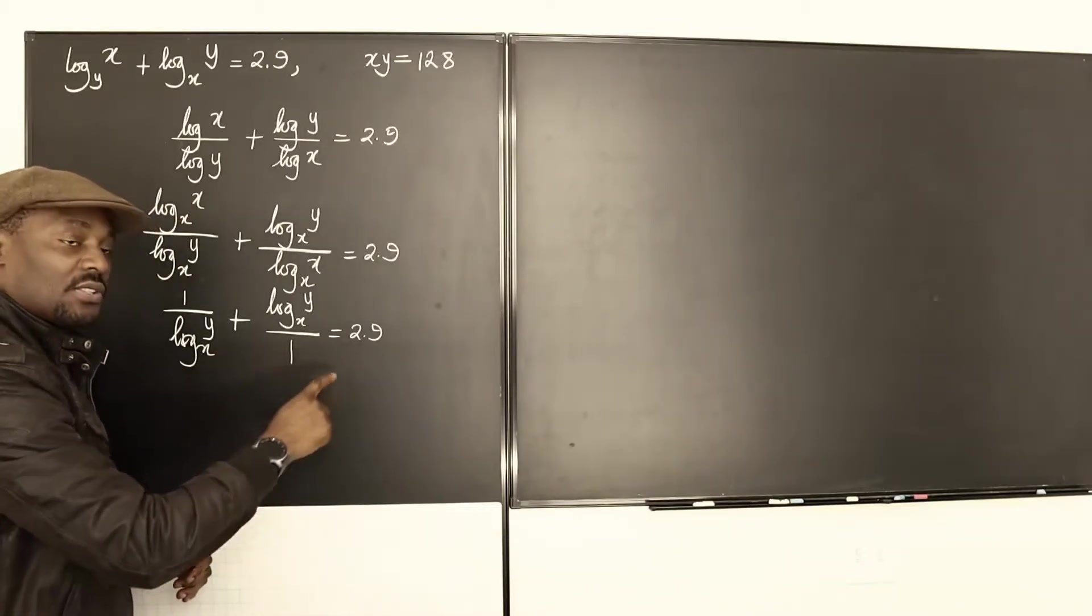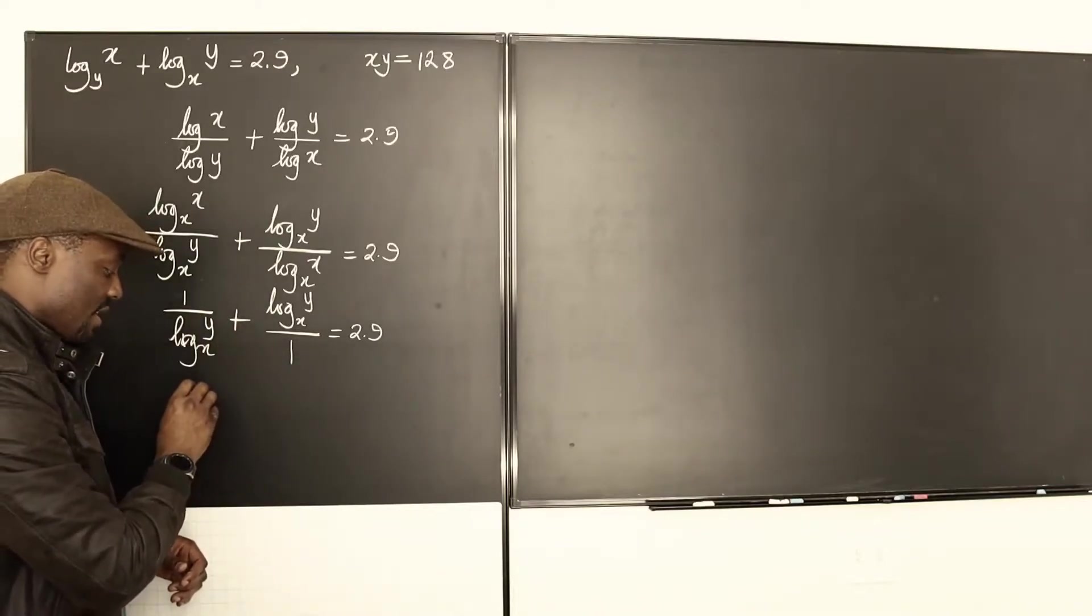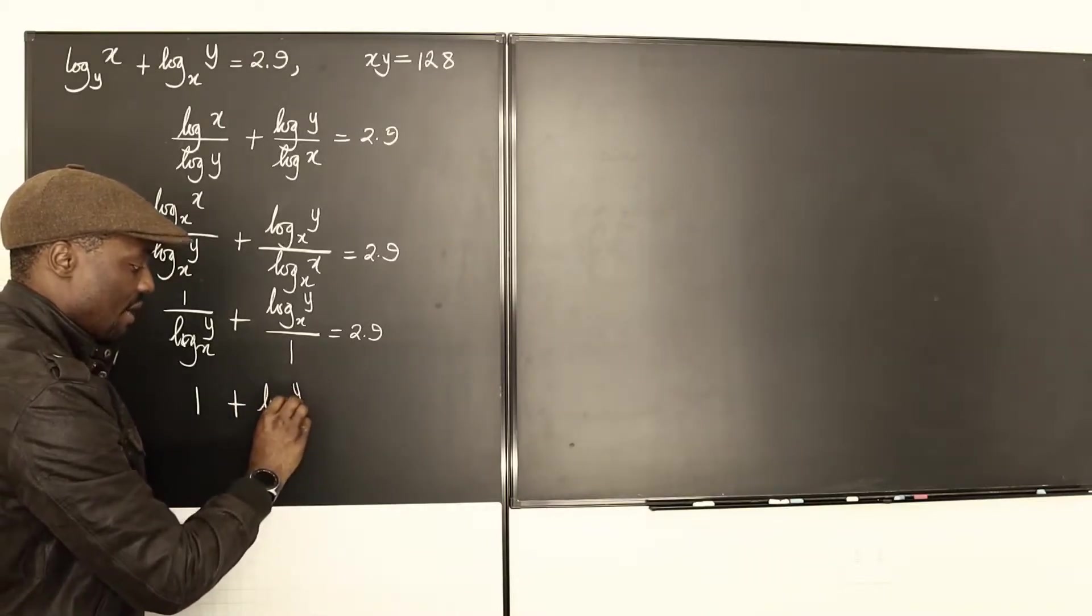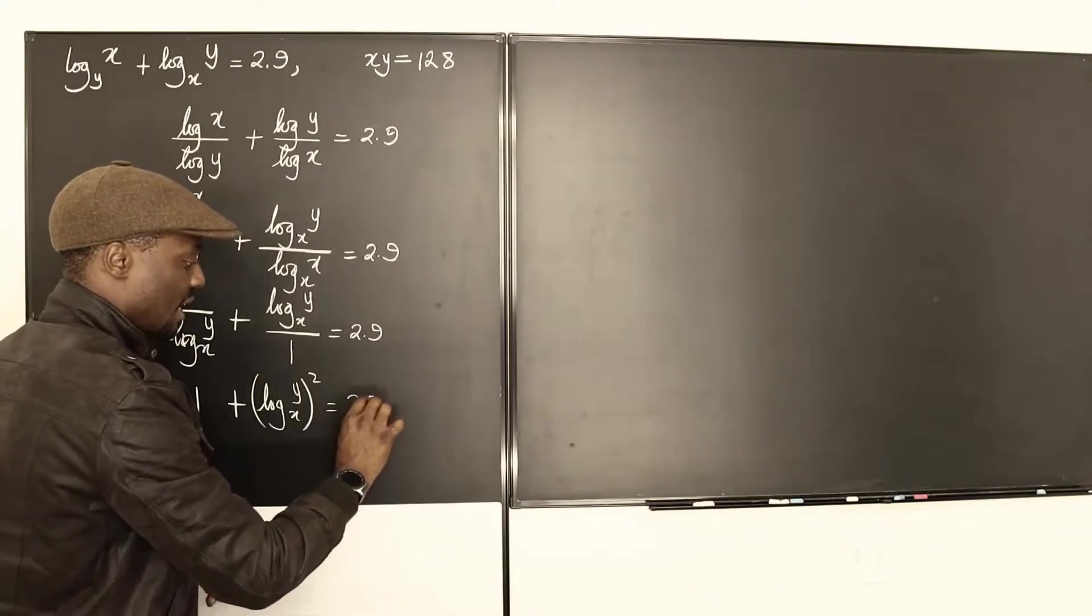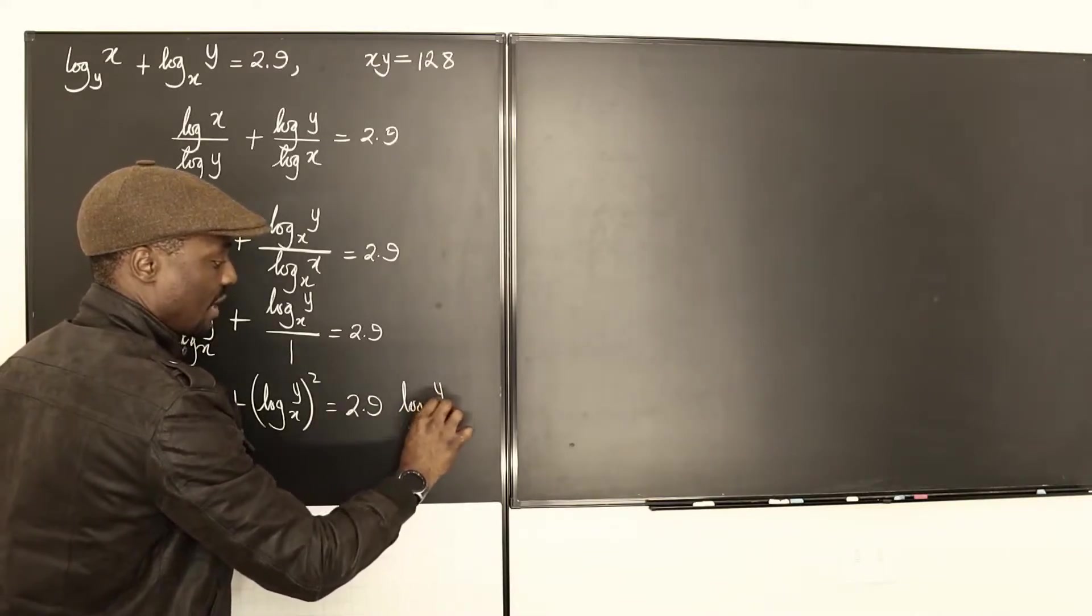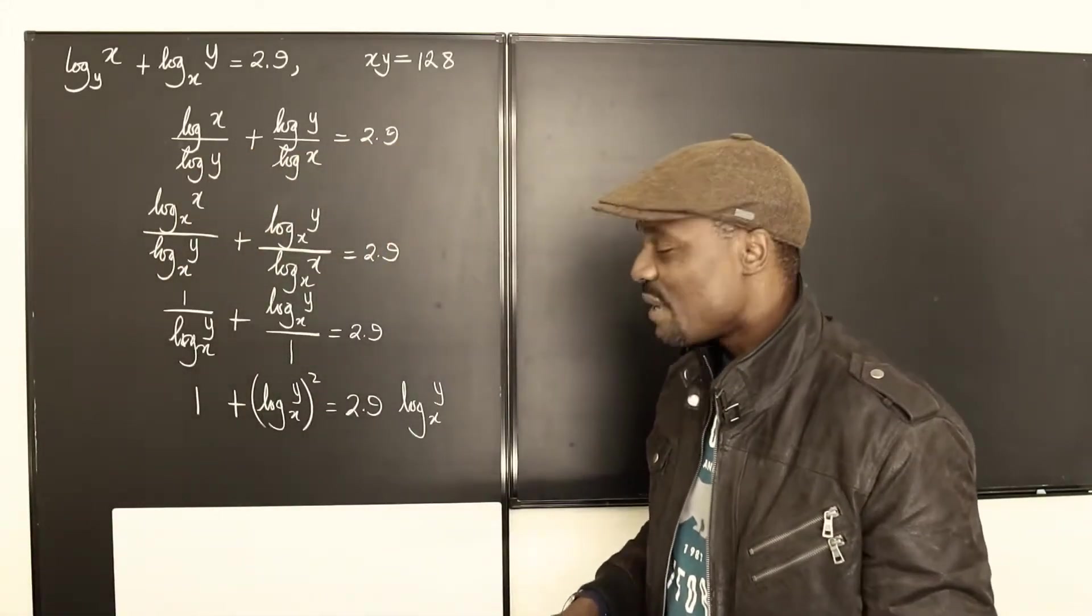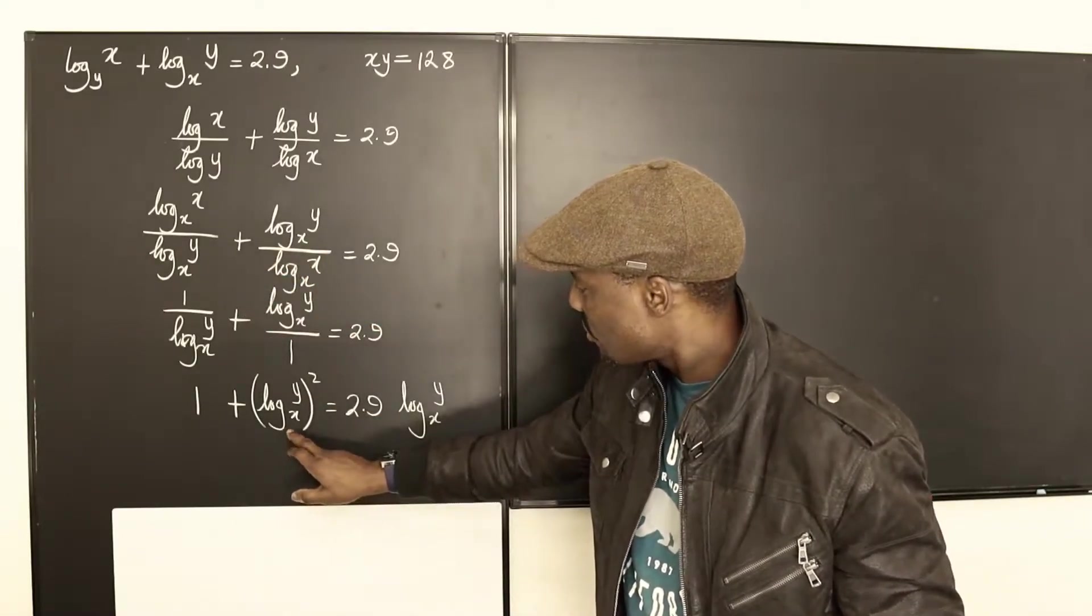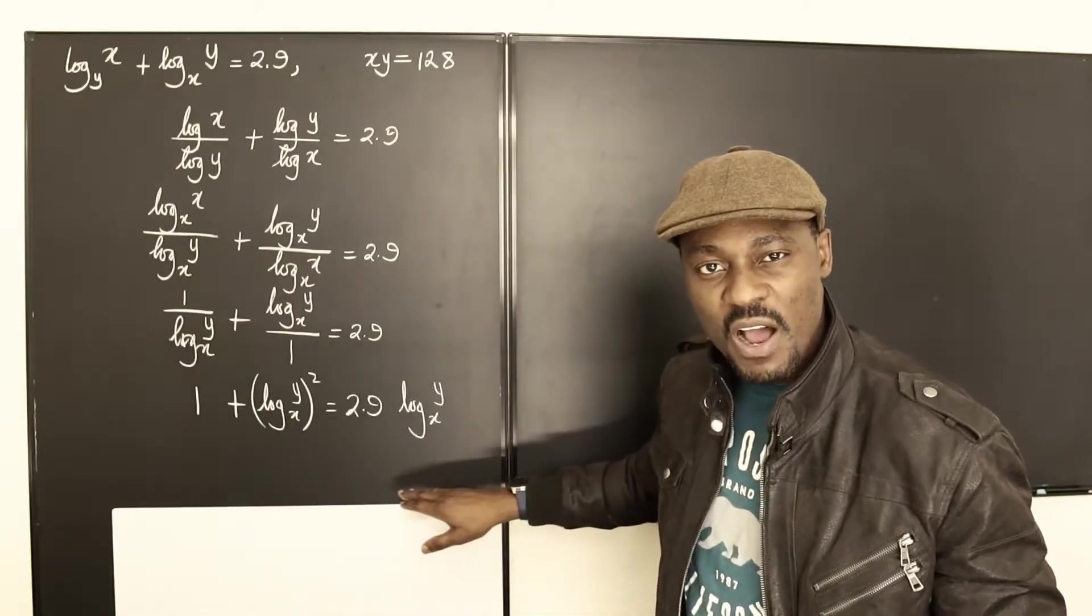If I multiply each term by this denominator, what I'm going to end up with is 1 plus log y base x squared equals 2.9 log y base x. You see how smooth that is. I've been able to get rid of the other log x. Now I have this expression. It looks like I can make a quadratic equation out of this.